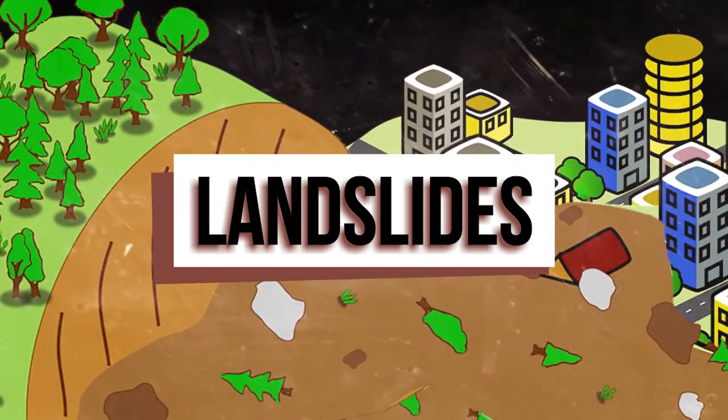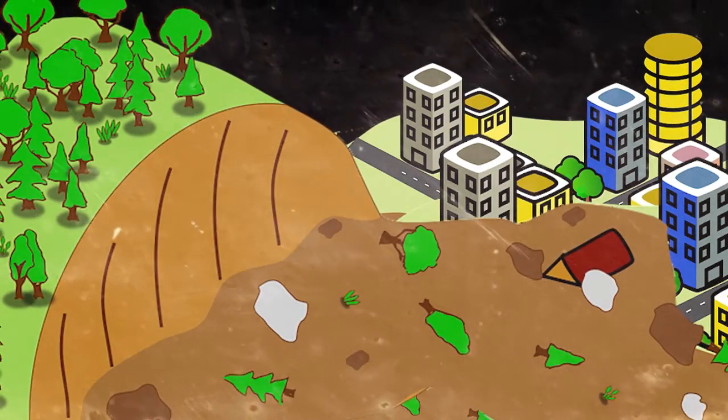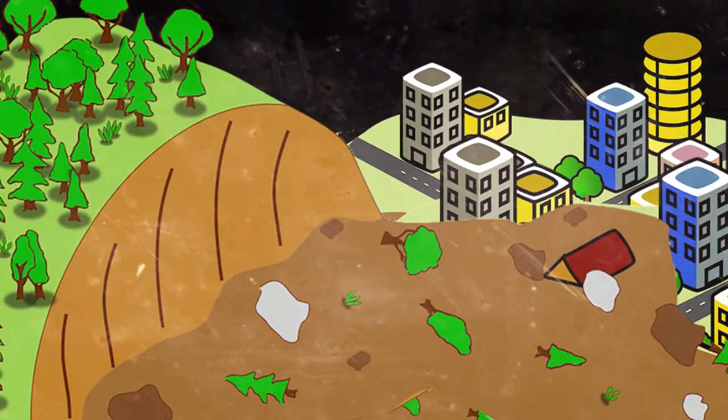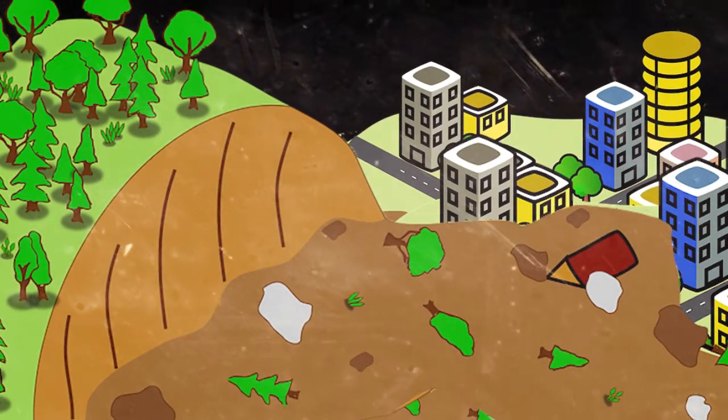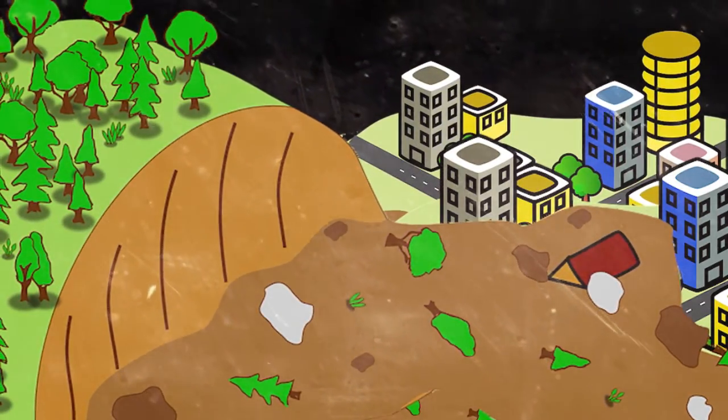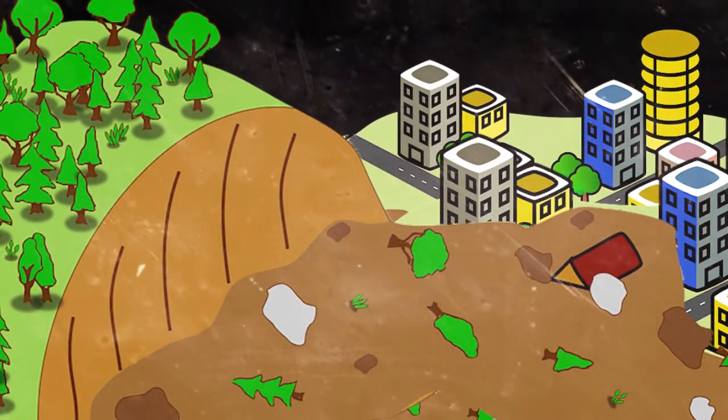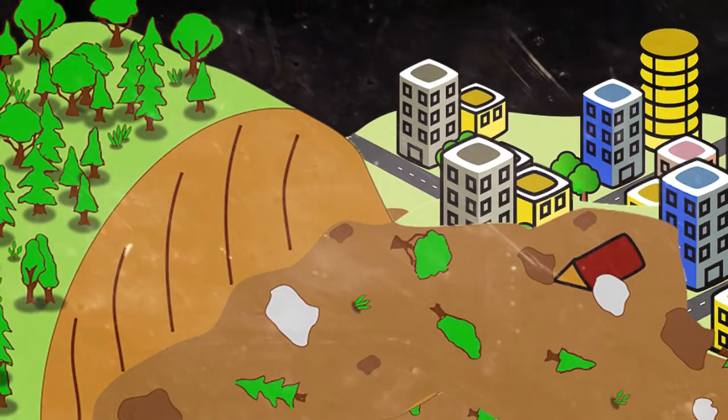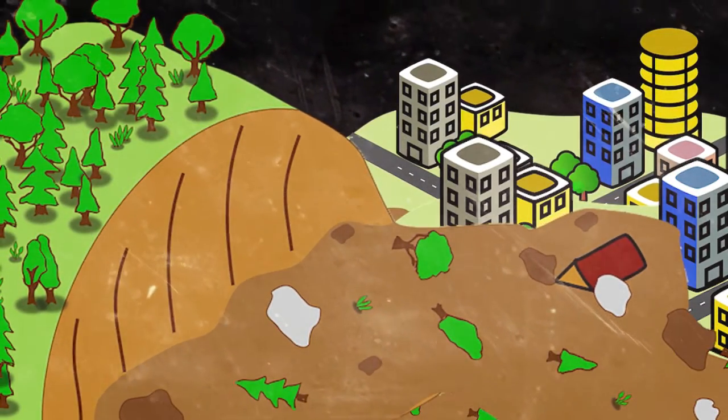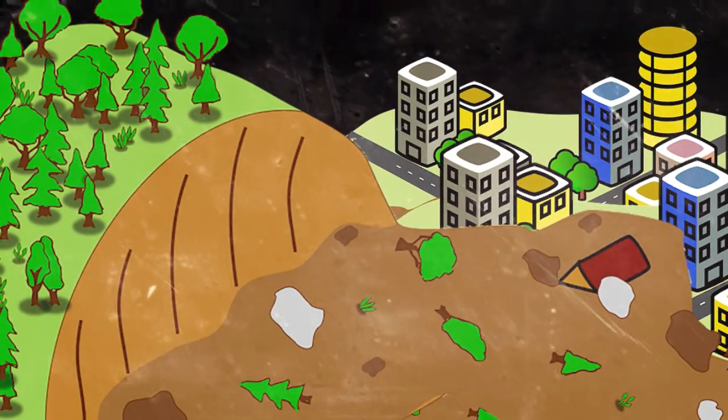Recognize the warning signs of a landslide. Stormwater drainage patterns on slopes near houses, particularly where runoff water converges, can suggest a higher risk. Additional warning indicators include the sound of trees cracking or boulders banging together, which might indicate moving debris, tiny slides or debris flows, or progressively tilting trees.